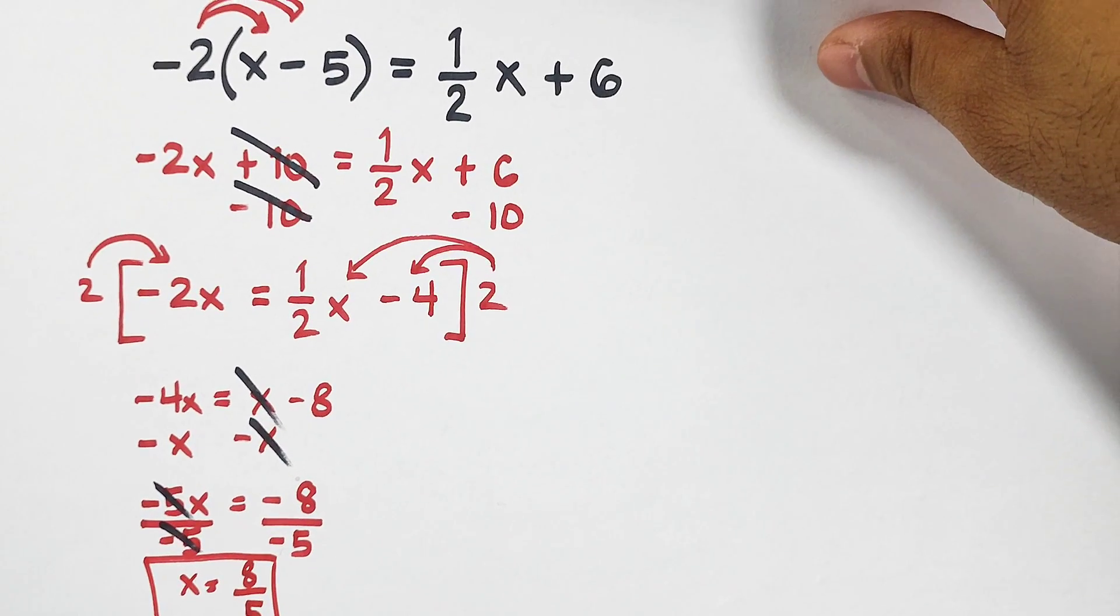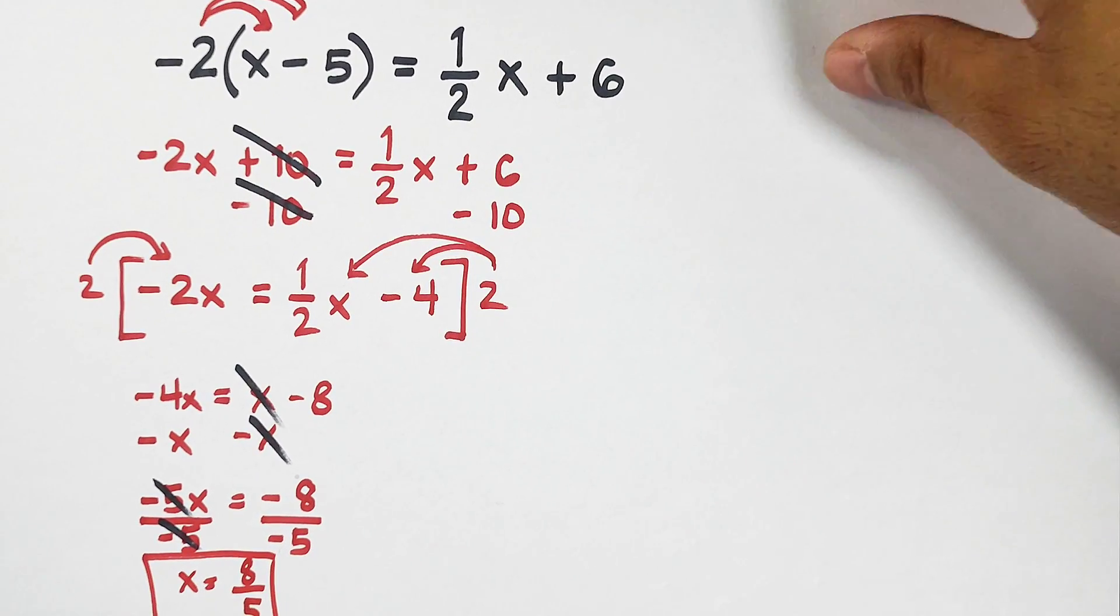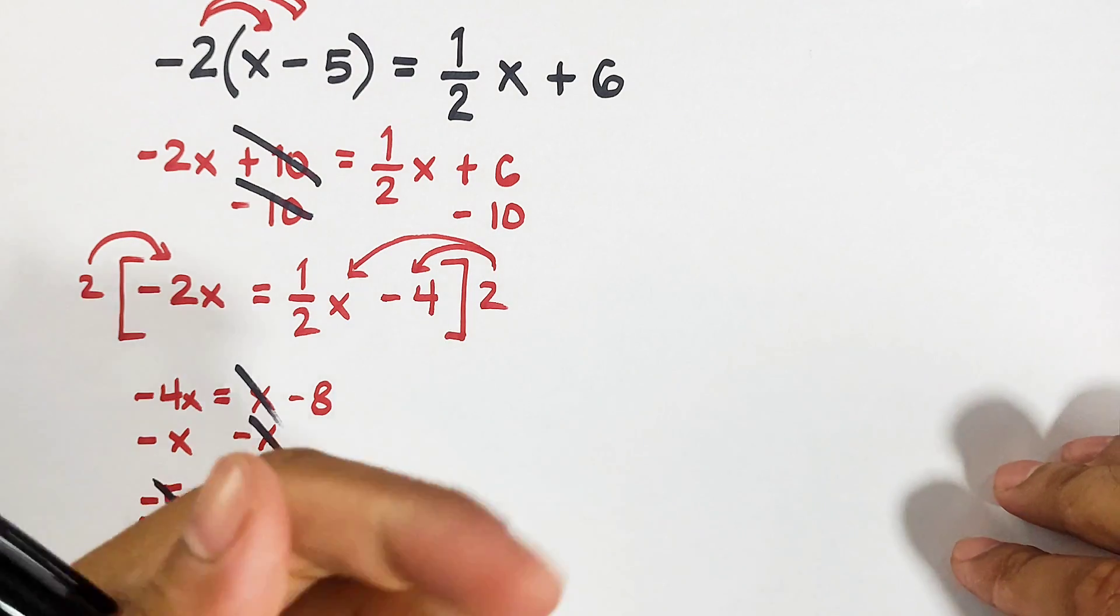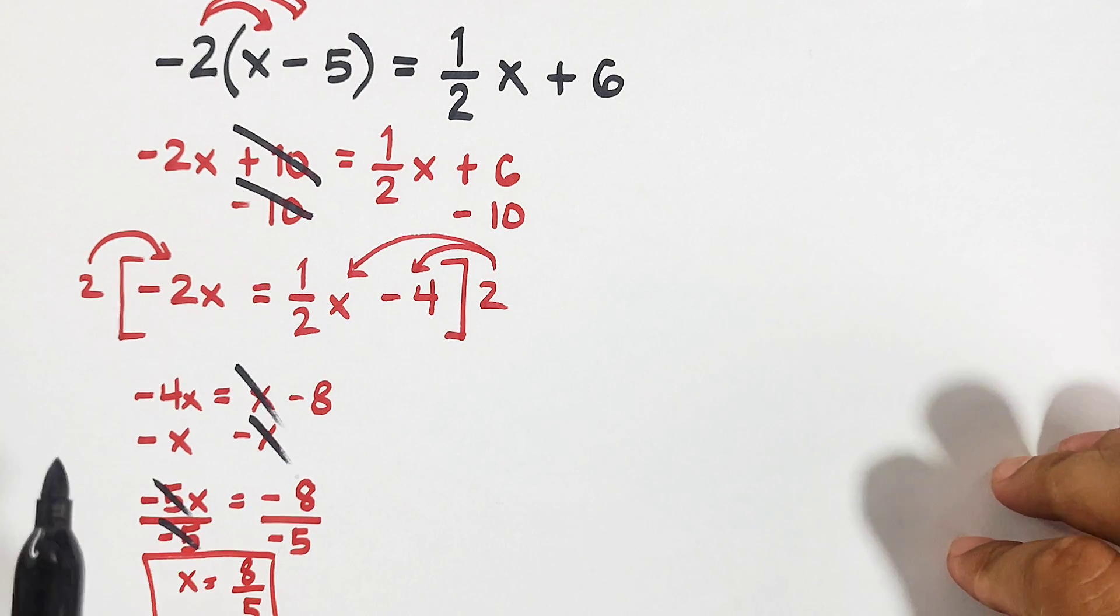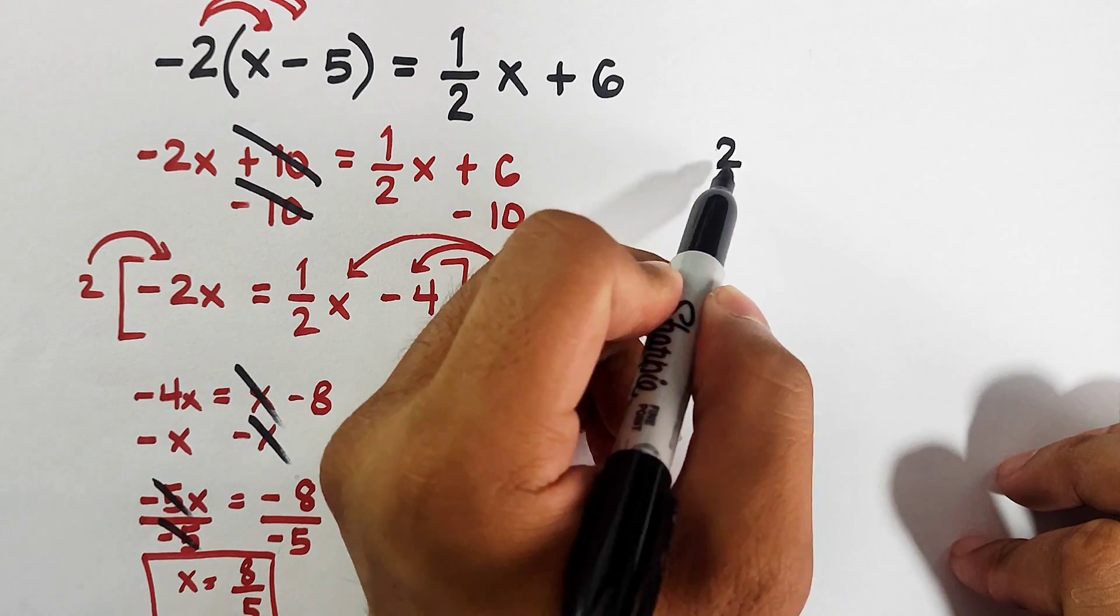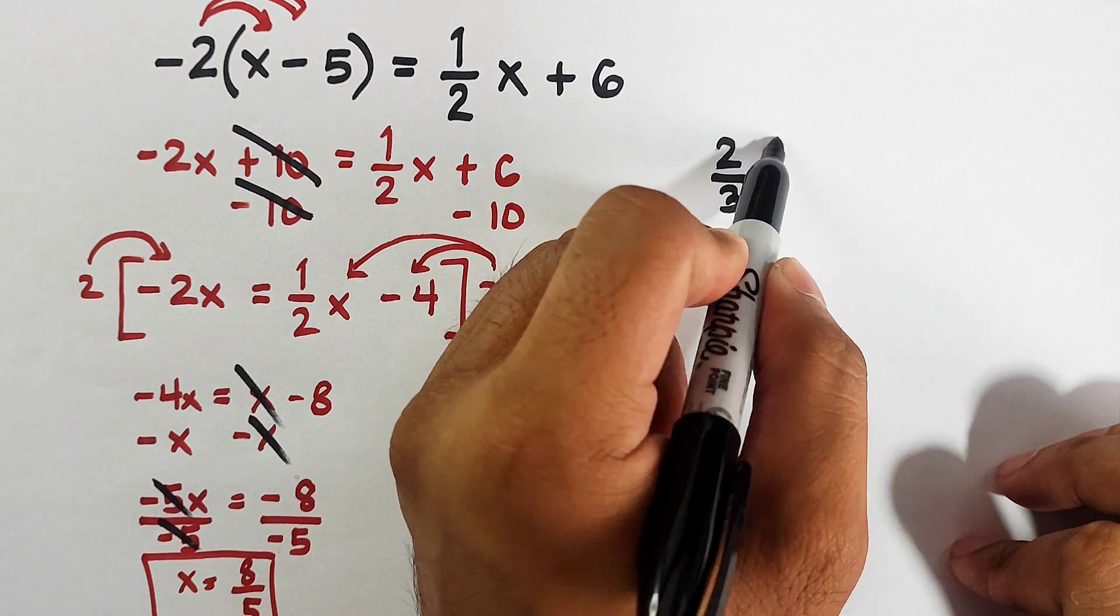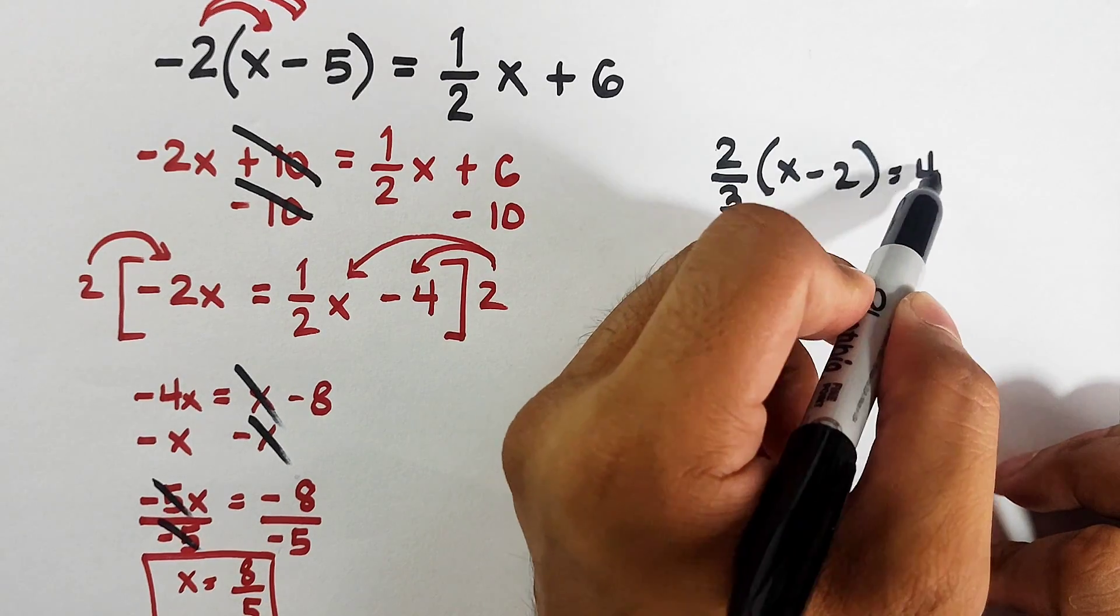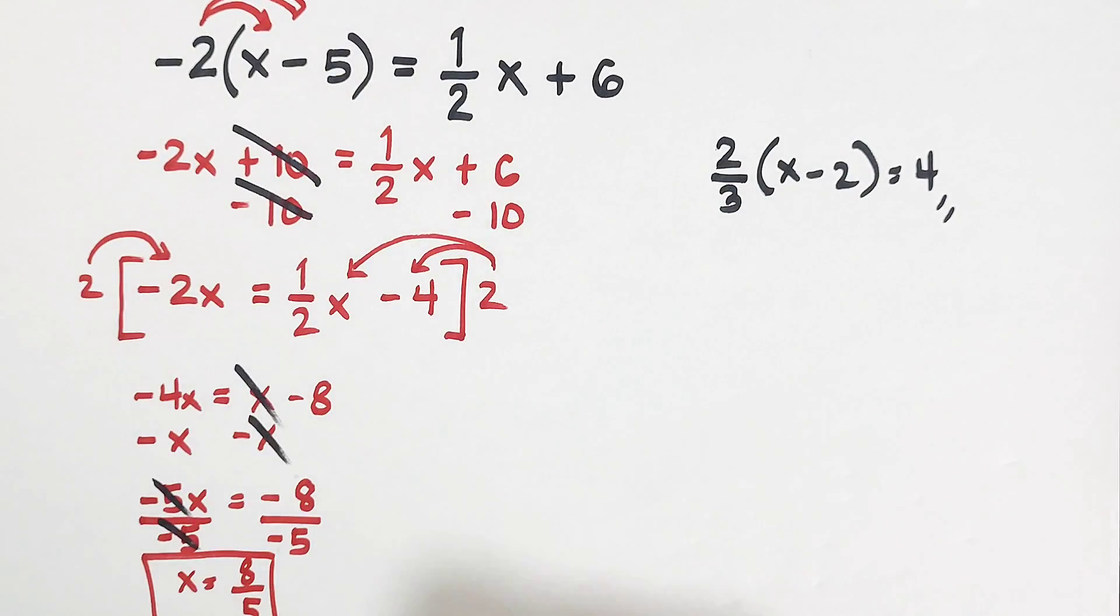Now guys, I hope you learned something from this video. And as part of our routine, I will give you an activity to solve. Comment down below what is your answer or what is the value of x in this equation. We have two-thirds times x minus 2 equals 4. So comment down below.